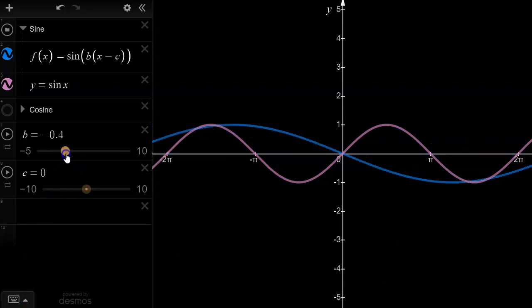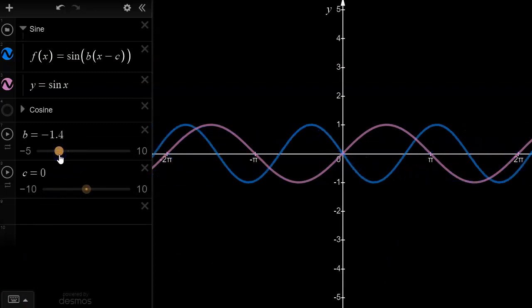When the b value is negative, notice that there is a reflection in the y axis. This does not affect how we talk about the period though, since the period cannot be negative.